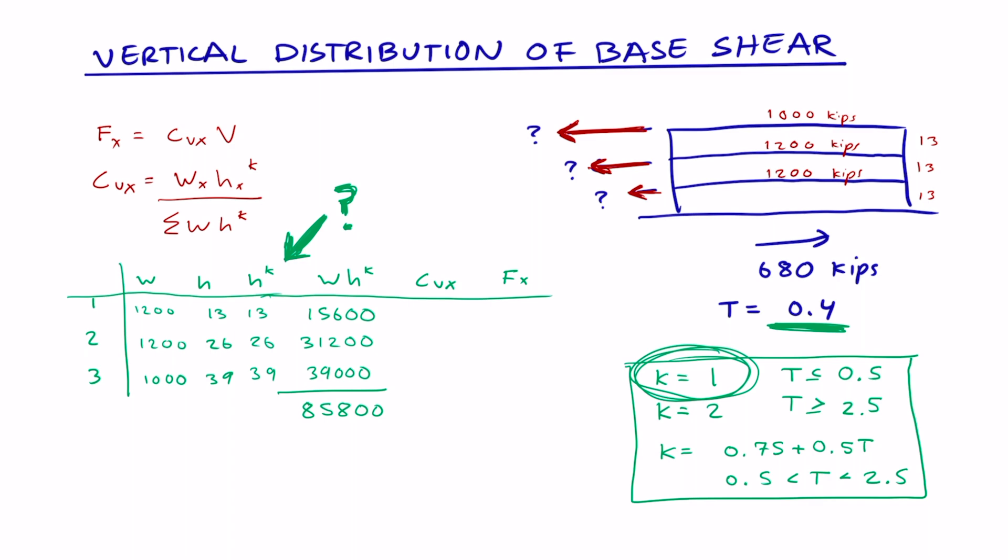Now we can easily find CVX, which is w*h^k for each level divided by the sum of w*h^k. We get the following values for CVX for each level. They should add up to 1.0. Now we can find the vertical distribution of the base shear for each level.